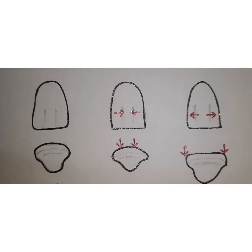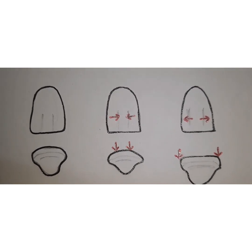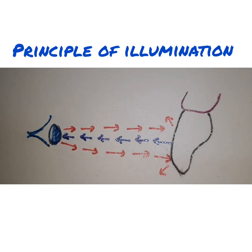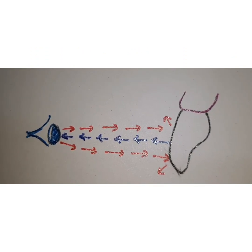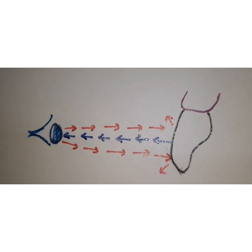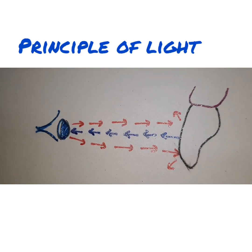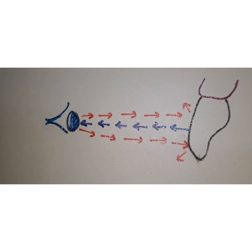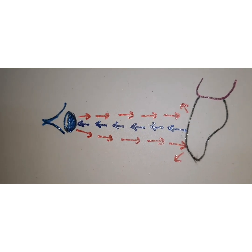There are different fundamentals and principles which help to create illusion. One is the principle of illumination: the perception that light approaches and the dark recedes. Modification of the amount of light that is deflected or reflected from the object will affect the sharpness of perception, which is used to create the phenomena of illusion.